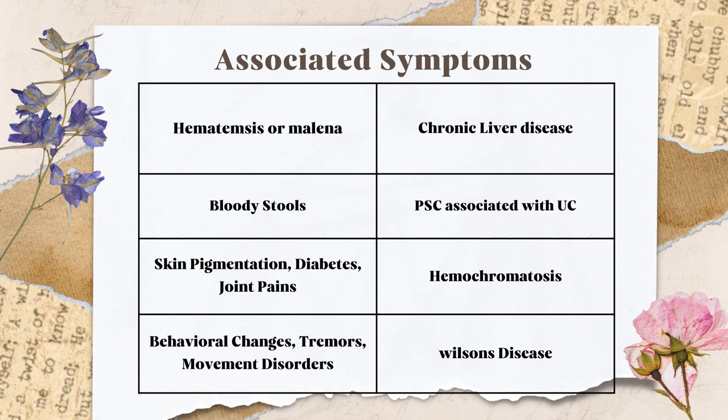If the patient has hematemesis or melena, that might indicate chronic liver disease. Other associated features of chronic liver disease to ask about include: abdominal distension due to ascites, change in sleep pattern (sleeping during the day, awake at night — hepatic encephalopathy), reduced urine output (hepatorenal syndrome), platypnea (breathlessness worse on standing — hepatopulmonary syndrome), and loss of libido or erectile dysfunction due to excessive estrogen levels in chronic liver disease.